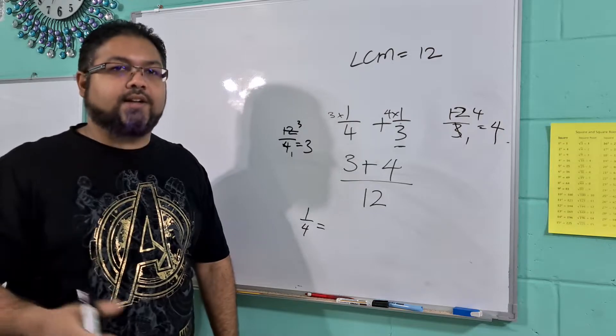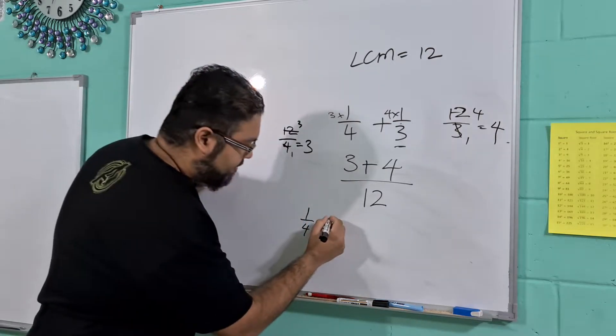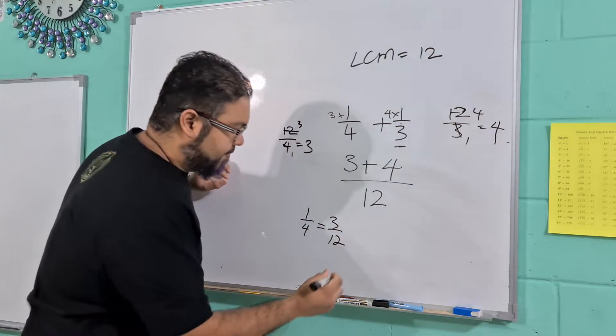and this is why we do equivalent fractions when we do fractions. First is equal to 3 over 12.